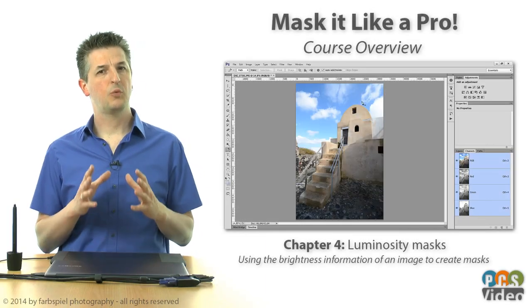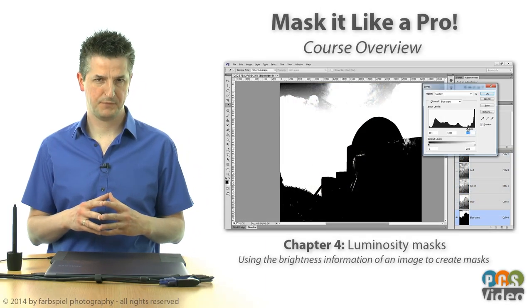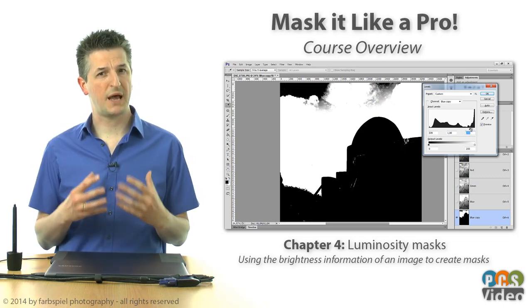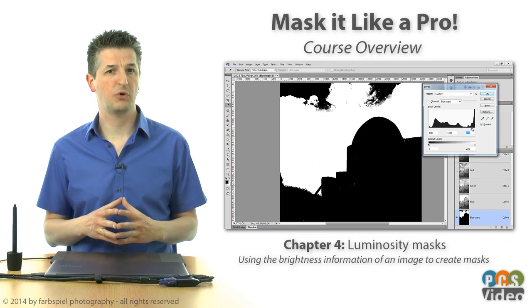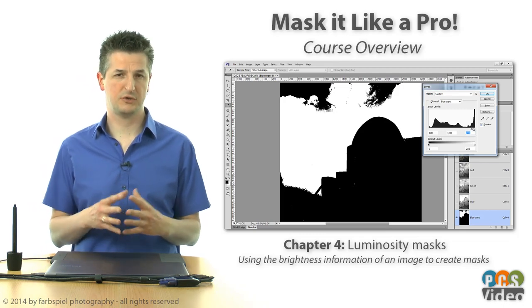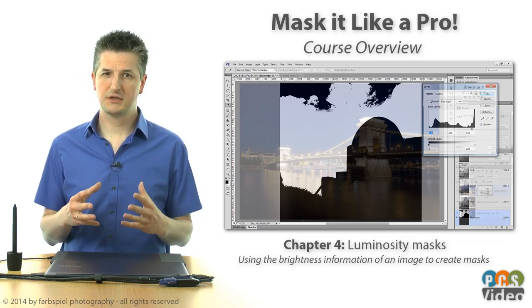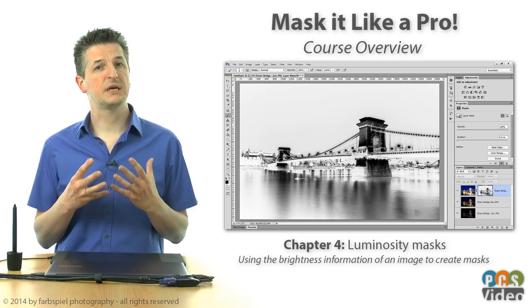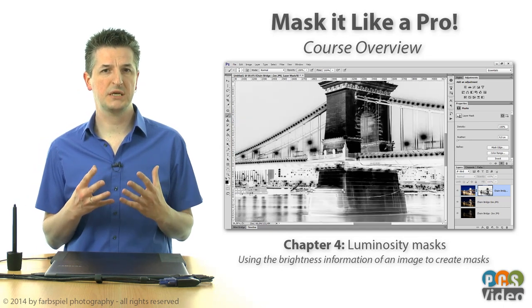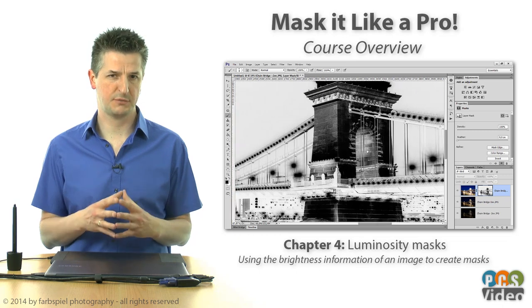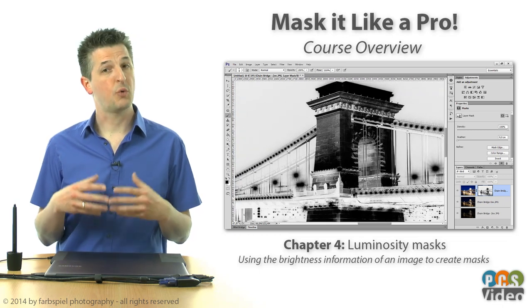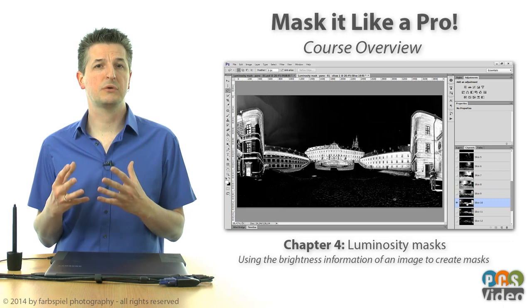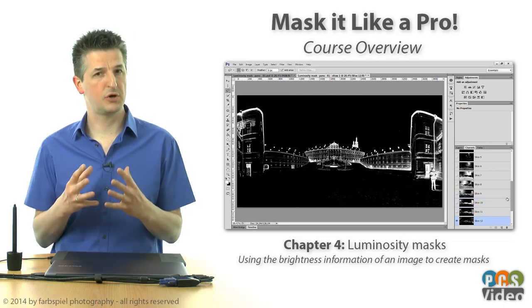In chapter 4 we will talk about luminosity masks. This technique uses the brightness information of an image layer to generate masks that give you fine-grained control over the tones in your images. Luminosity masks have gained widespread usage, for example in landscape photography, because they allow the photographer to overcome many common exposure and post-processing problems while retaining a completely natural looking result. I will show you how to create and use them in your images.